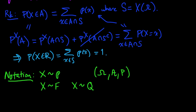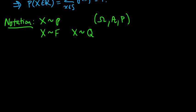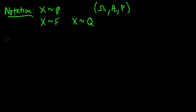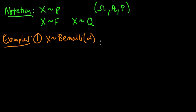So now let me give you some examples of discrete random variables, some common examples. The first one, X is Bernoulli alpha for some alpha in the interval from 0 to 1. This is like a coin flip, so alpha is the probability of getting heads or 1, and 1 minus alpha is the probability of getting tails.